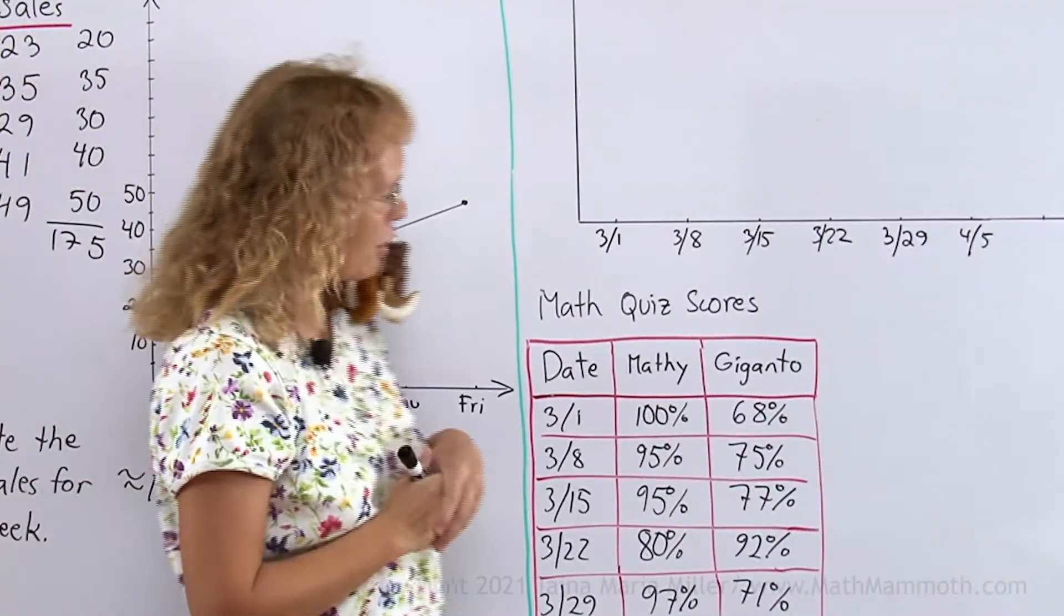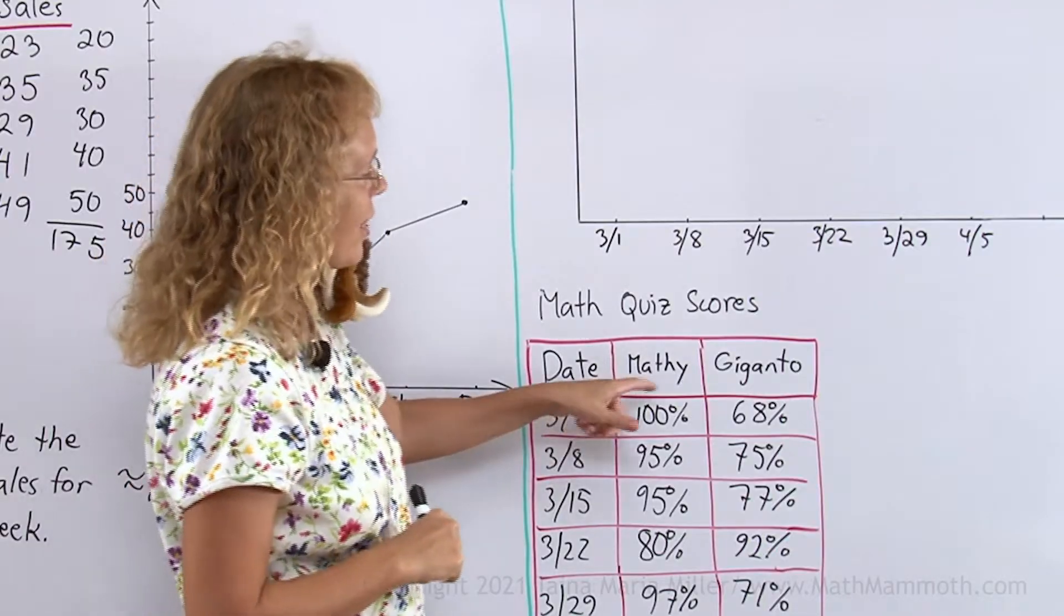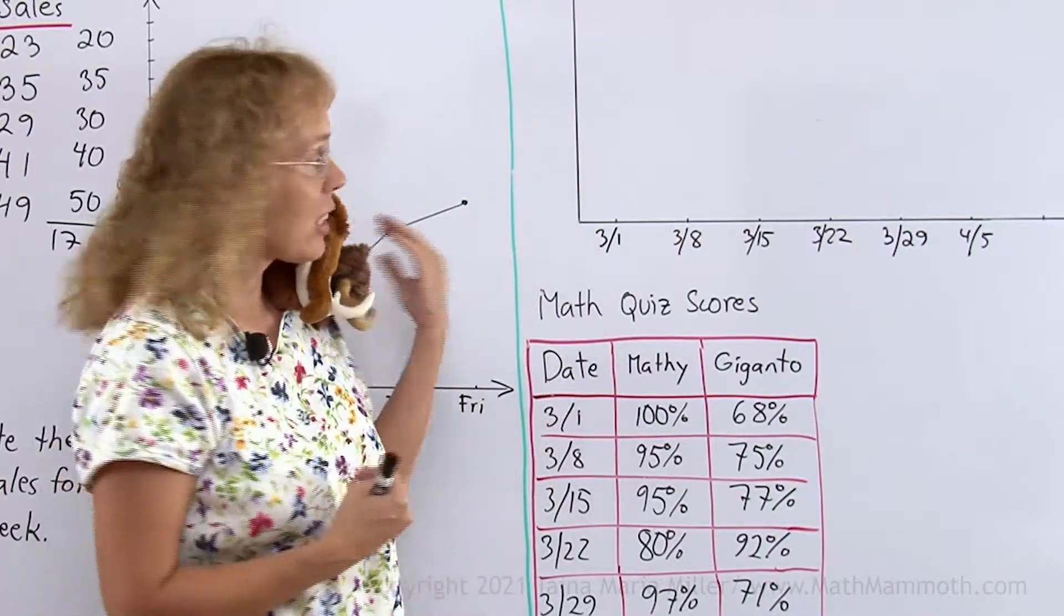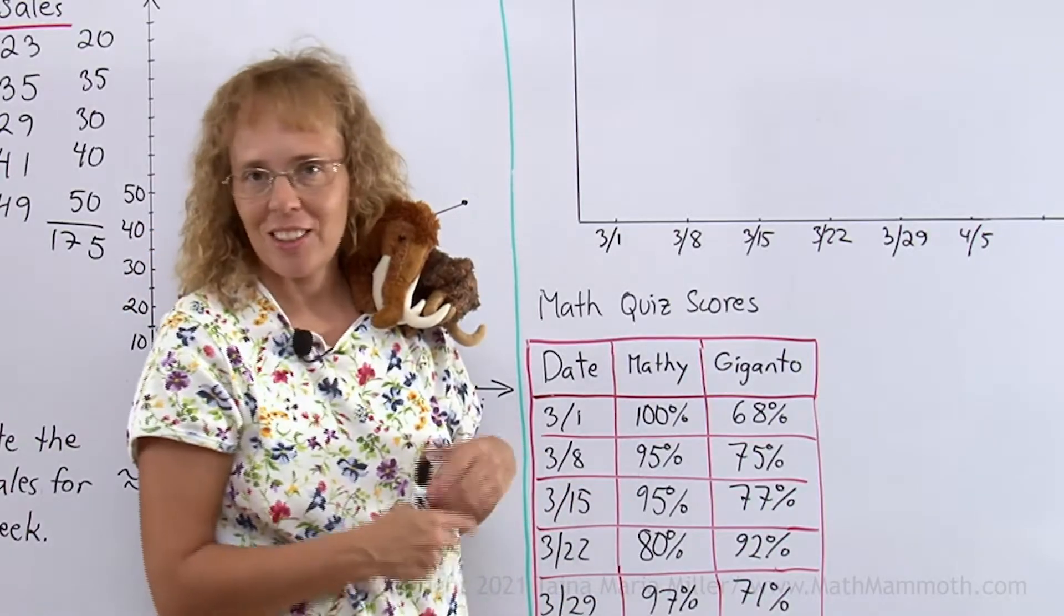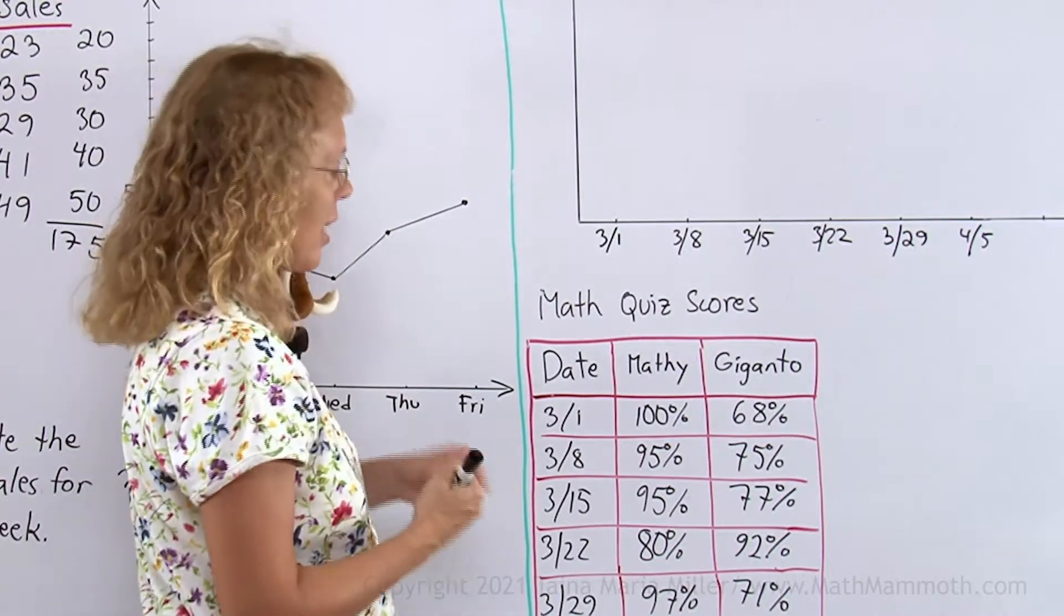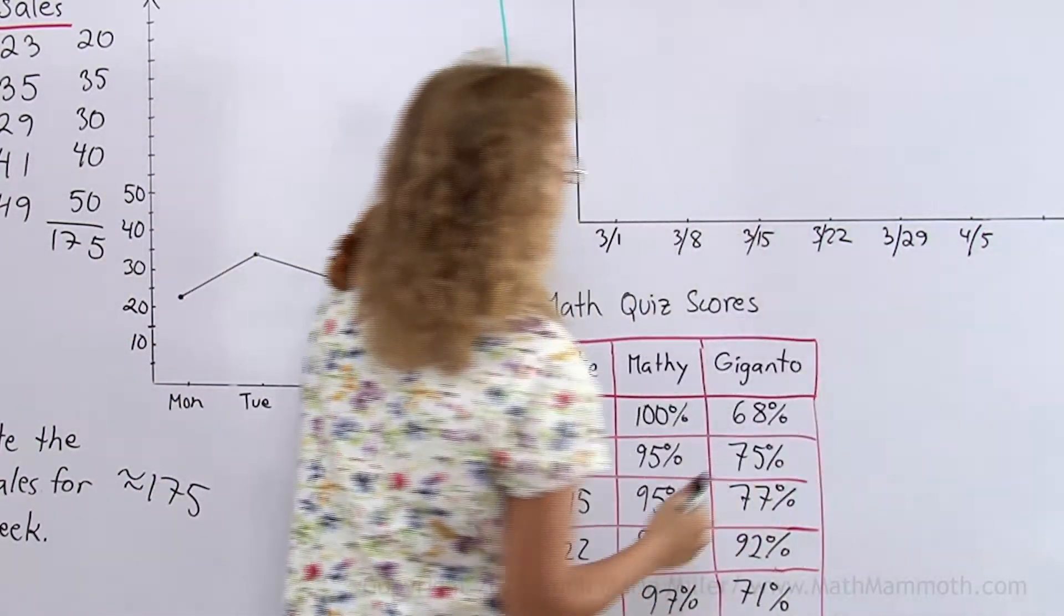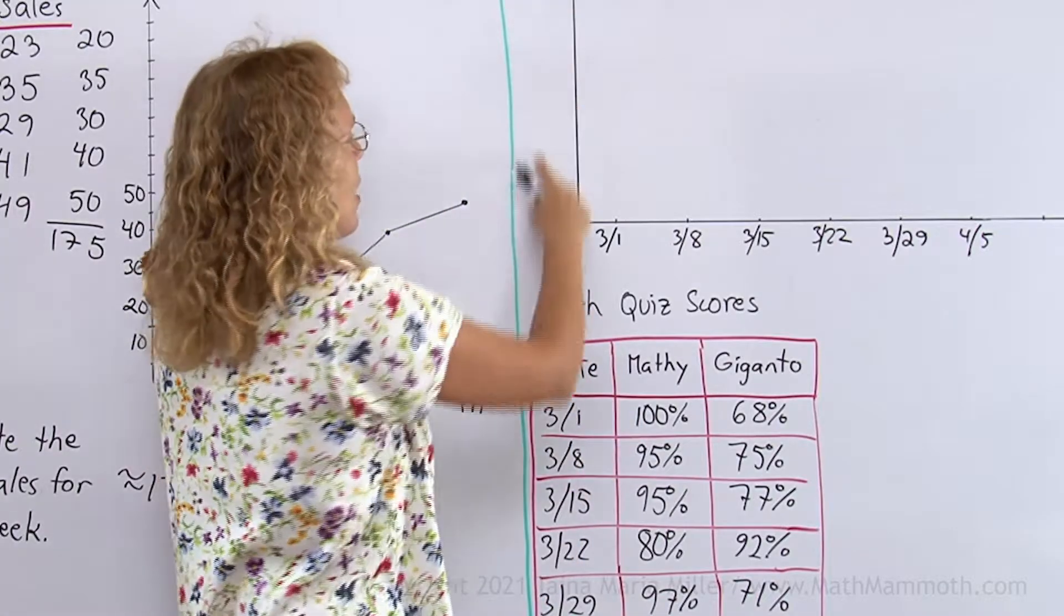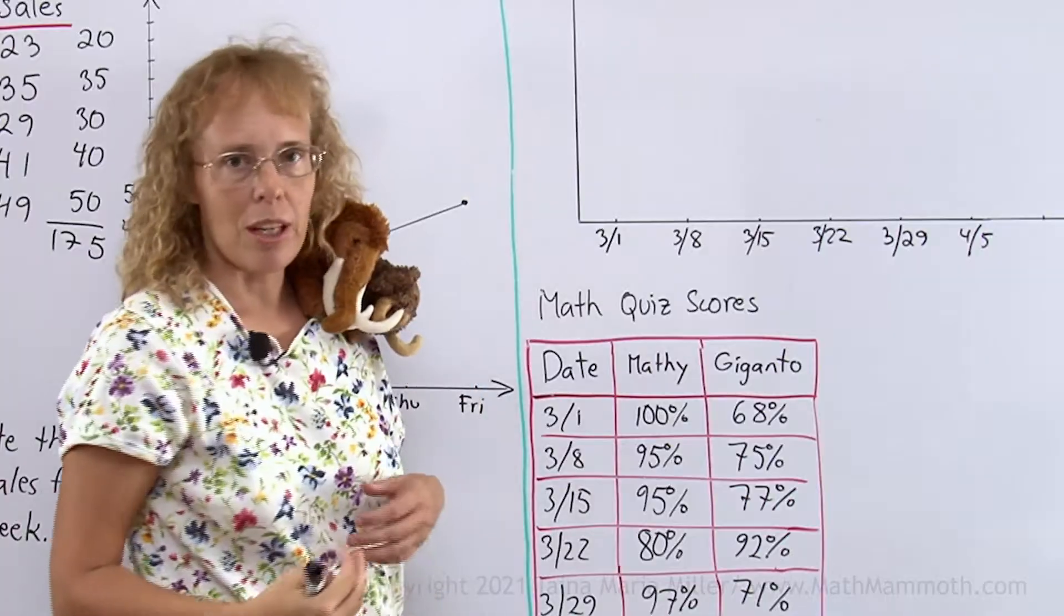Now we will go on to the second problem, where we will have a double line graph. It has to do with Mathis and Giganto's quiz scores. Mathis has pretty good numbers, like near 100%, and Giganto has some others. Again, we have dates here, so they go here on the horizontal axis. Over here, we will need to now decide the scaling. And let me take my ruler to show you how that works.